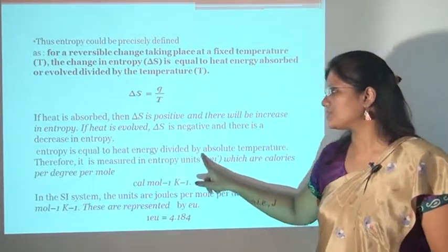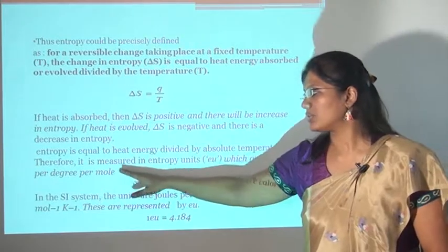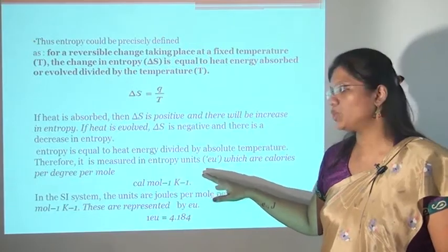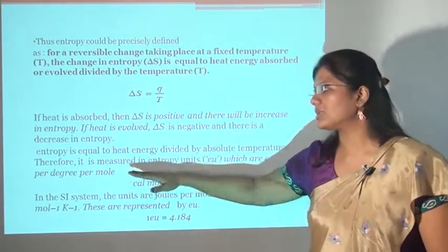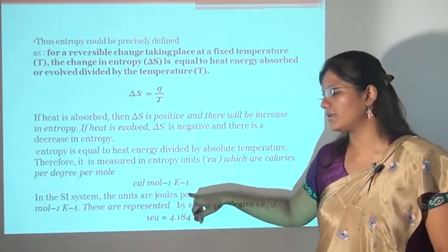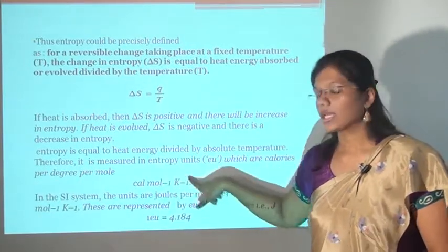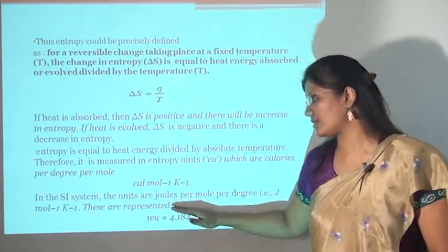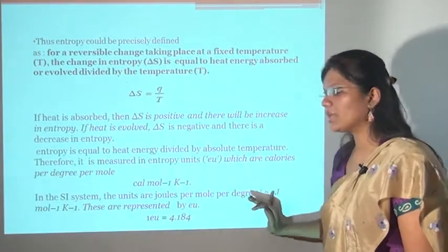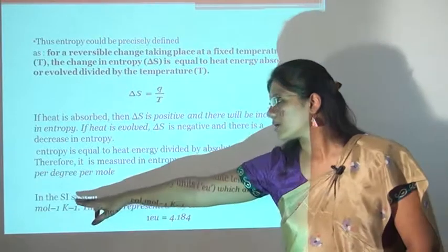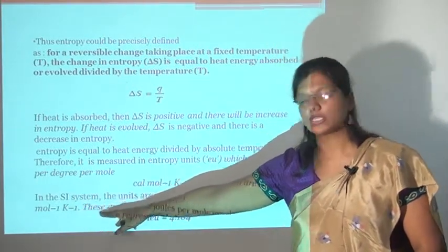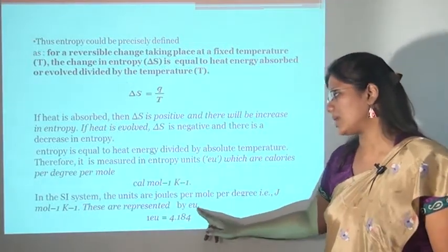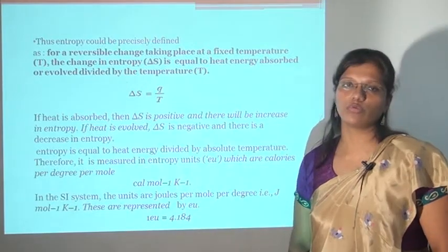Entropy equals heat energy divided by absolute temperature. Therefore it is measured in entropy units (EU), which are calories per degree per mole, or calorie per mole per Kelvin. In the SI system, the units are joules per mole per degree, represented as J mol⁻¹ K⁻¹. One EU is equal to 4.184 of the corresponding SI unit.